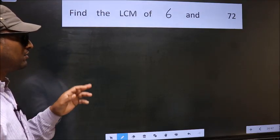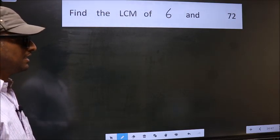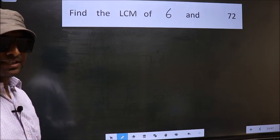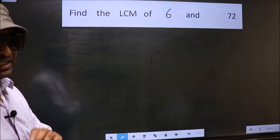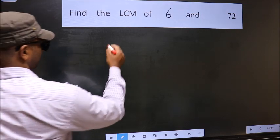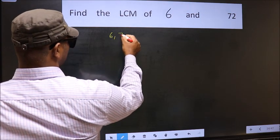Find the LCM of 6 and 72. To find the LCM, first we should frame it in this way: 6, 72.